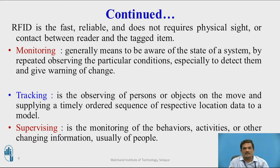In RFID, it is not noticed by the object whether it is being traced or not. But in the case of a barcode system, the object can identify that its particular identification is being traced by some system.